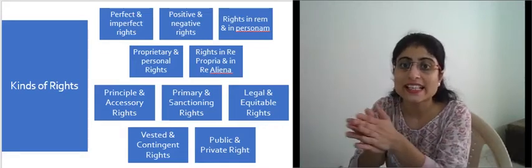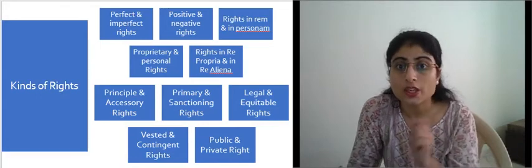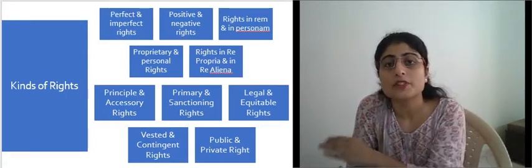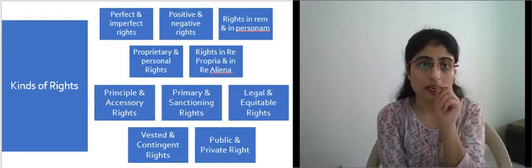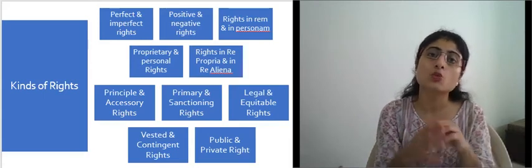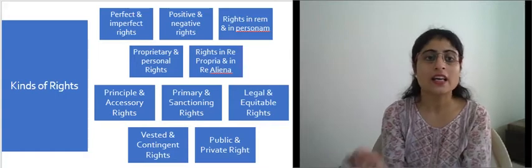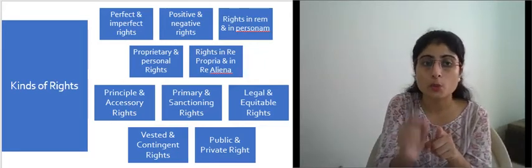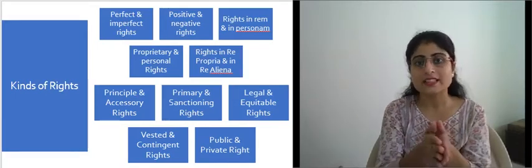Next are rights in re propria and rights in re aliena. 'Propria' means one's own property and 'aliena' means somebody else's. Rights in re propria means a right in respect of one's own property, and it contemplates complete ownership over that property — the jurisprudential outcome of ownership. Rights in re aliena means rights in respect of another individual's property, and is the jurisprudential outcome of dominant or servient heritage, for example, easements.